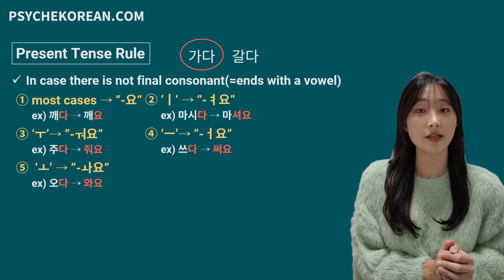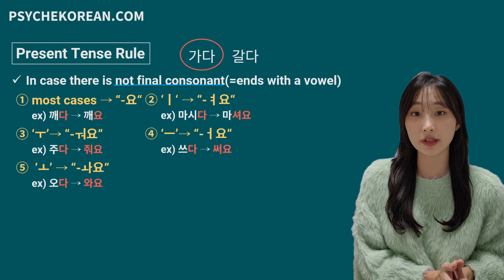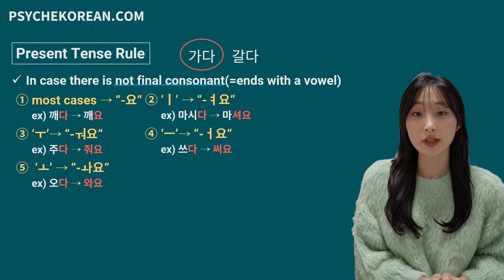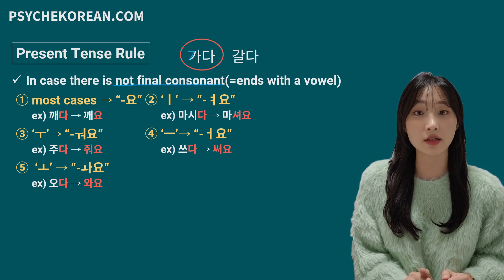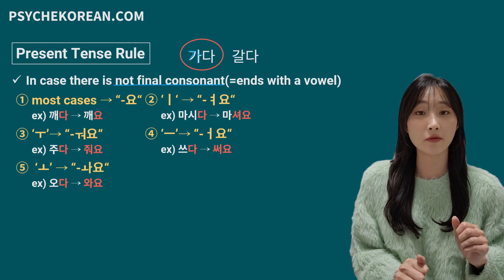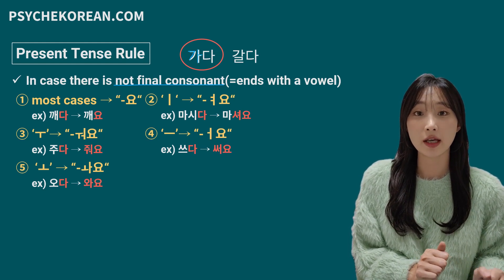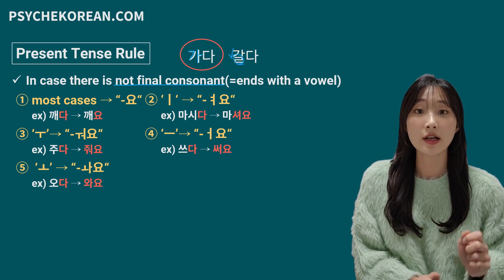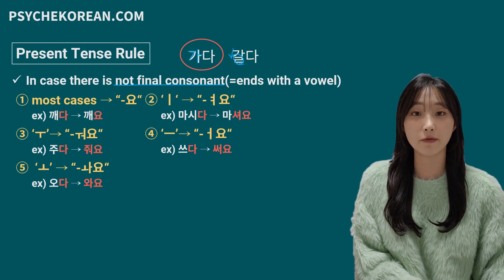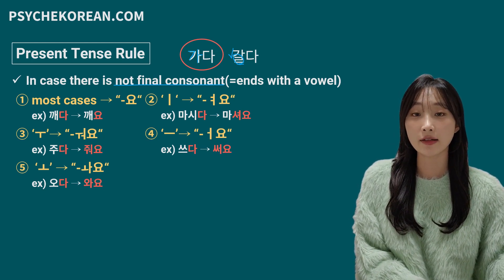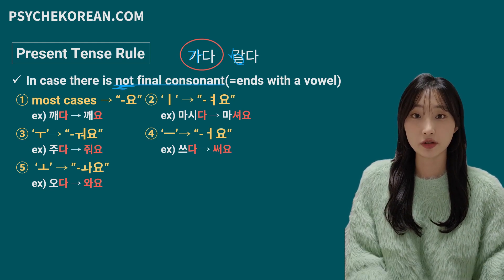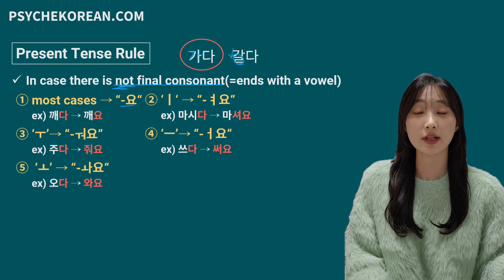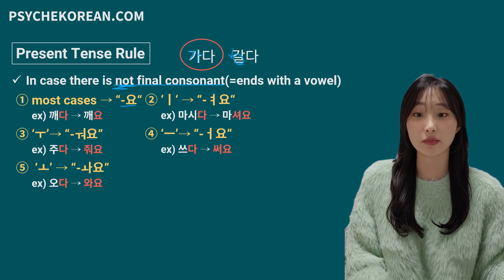The second case is when there is no final consonant. As covered in the previous video, a Korean syllable always consists of one consonant and one vowel — those are mandatory. But the final consonant is optional. If there is a final consonant, we follow the first rule. If there is no final consonant, we follow this rule: in most cases, you just add 요 at the end to make the present tense.